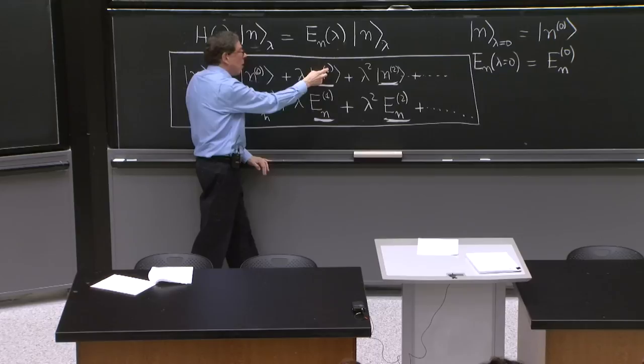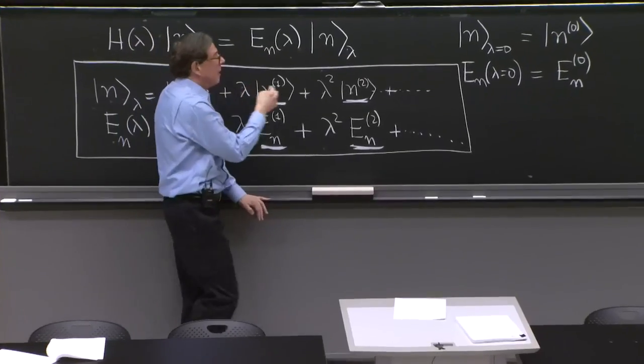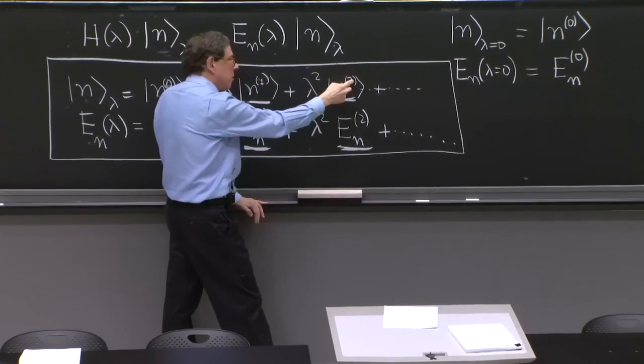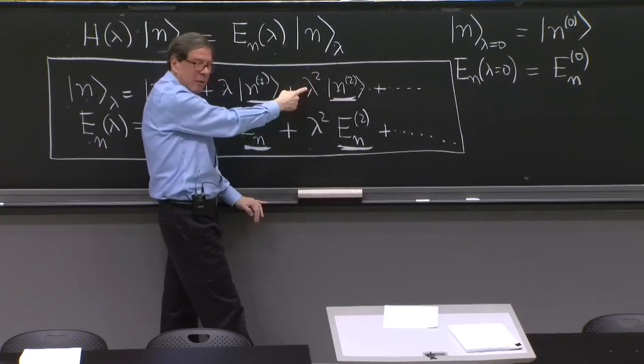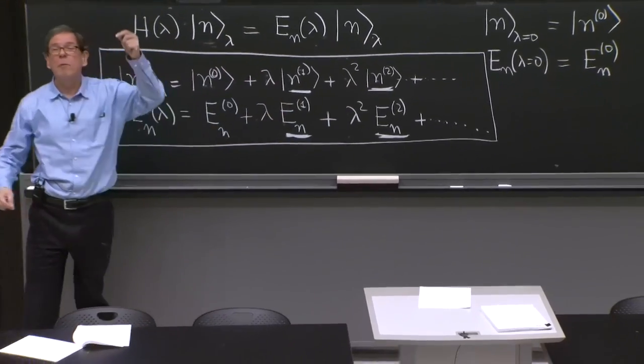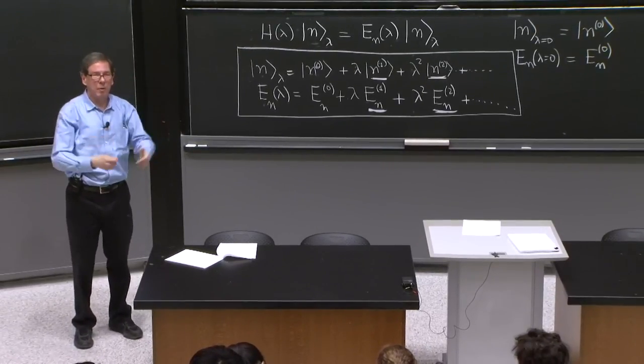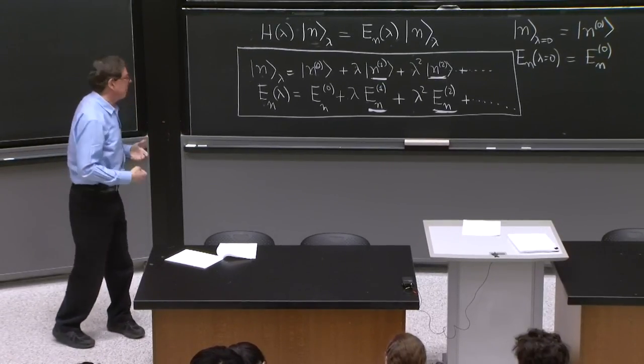That's why I put a 1. You should think of it as first order because it comes with a lambda. This is the second order correction to the state because it comes with lambda squared. And the same thing here. So the superscript is telling you what order in lambda you're working, to what accuracy.